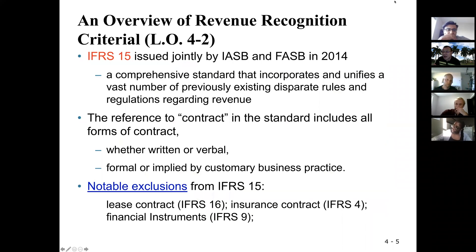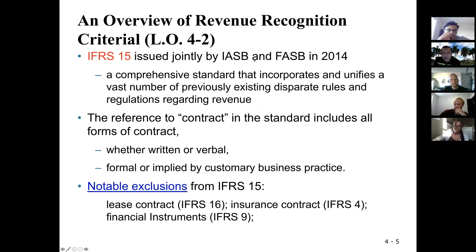The accounting standard helps us limit the alternatives we can use. IFRS 15 is the relevant standard for revenue recognition. It was issued in 2014 — fairly new. IFRS is still issuing new standards every year, and revenue recognition is important, which is why this one was issued back in 2014.